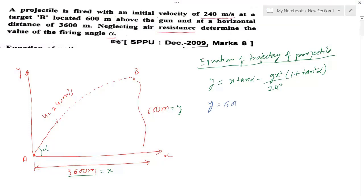y is given, that is 600 meters, and x is given, that is 3600 meters. u is given, that is 240 meters per second, and I have to find alpha. In this equation, the only unknown is alpha.